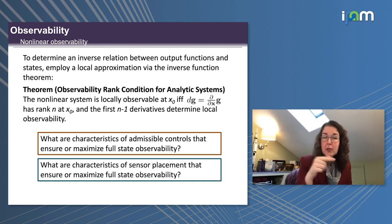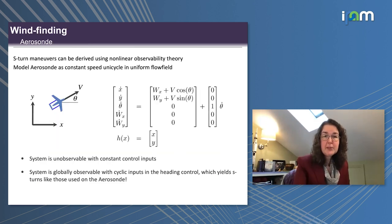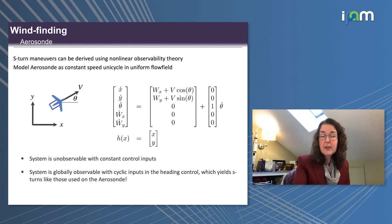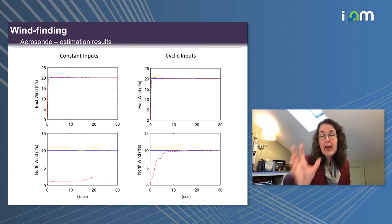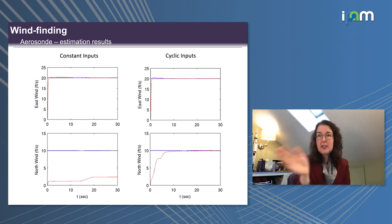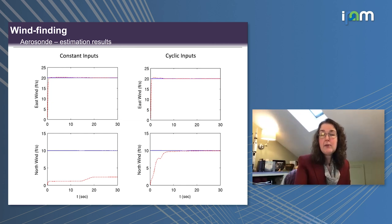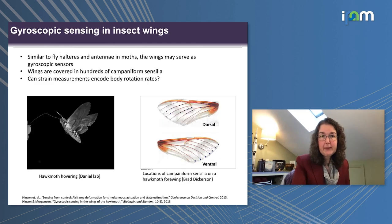To demonstrate this with the AeroSonde example: the simple model has states x, y, theta — position and orientation in the plane — plus wind direction components x and y, and we want to estimate wind from GPS measurements of x and y. Working through the mathematics, for the system to be observable it actually must be moving in more than a straight line — it needs heading variations. With constant inputs it cannot determine both wind directions. But with cyclic motions like S-turns, you can reasonably quickly lock onto both wind direction components.